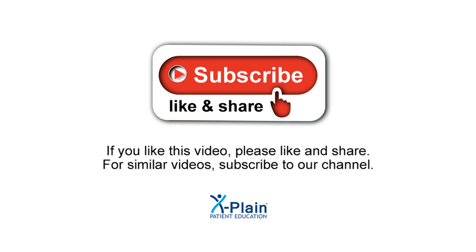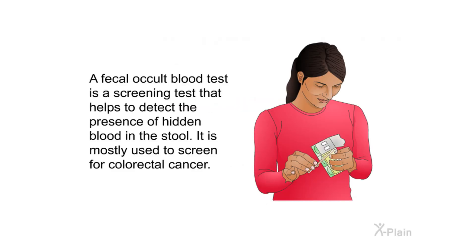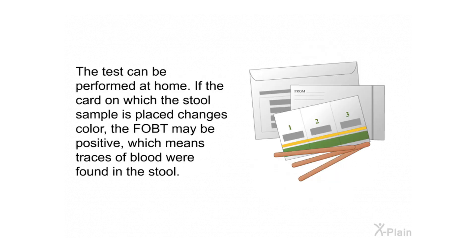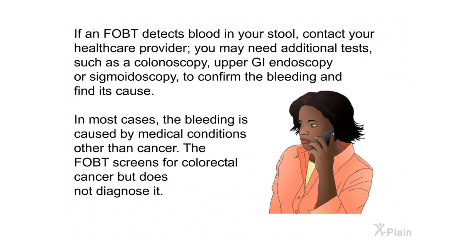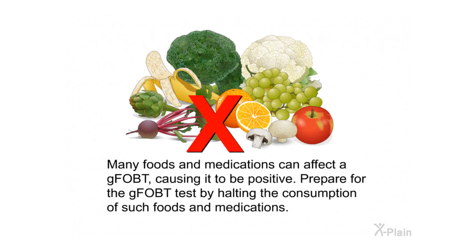Summary. A fecal occult blood test is a screening test that helps detect the presence of hidden blood in the stool. It is mostly used to screen for colorectal cancer. The test can be performed at home — if the card on which the stool sample is placed changes color, the FOBT may be positive, meaning traces of blood were found in the stool. If an FOBT detects blood, contact your health care provider. You may need additional tests such as a colonoscopy, upper GI endoscopy, or sigmoidoscopy to confirm the bleeding and find its cause. In most cases, the bleeding is caused by medical conditions other than cancer.